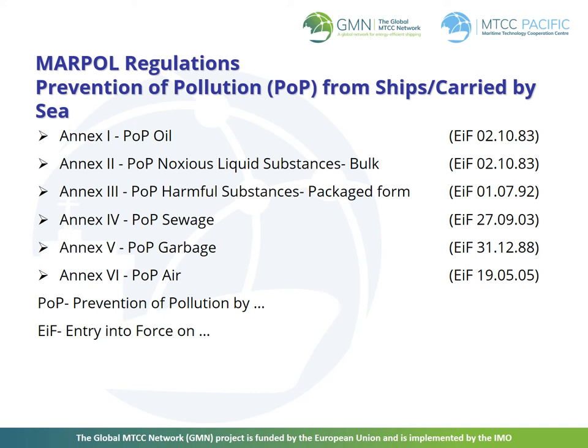Annex 5: Prevention of pollution by garbage from ships, entered into force 31st December 1988. This annex deals with different types of garbage and specifies the distances from land and the manner in which they may be disposed of. The most important feature of this annex is the complete ban imposed on the disposal into the sea of all forms of plastic. Annex 6: Prevention of air pollution from ships, entered into force 19th May 2005. This annex sets limits of sulphur oxide and nitrogen oxide emissions from ship exhausts and prohibits the deliberate emissions of ozone-depleting substances.